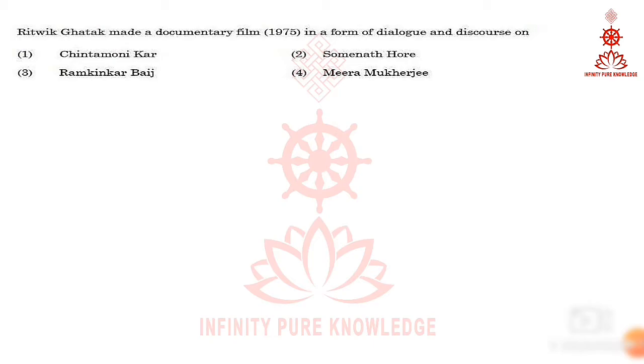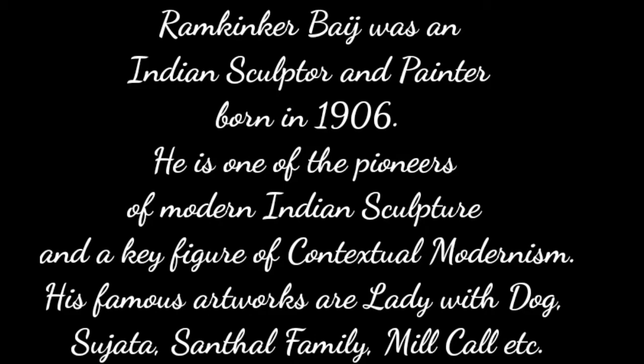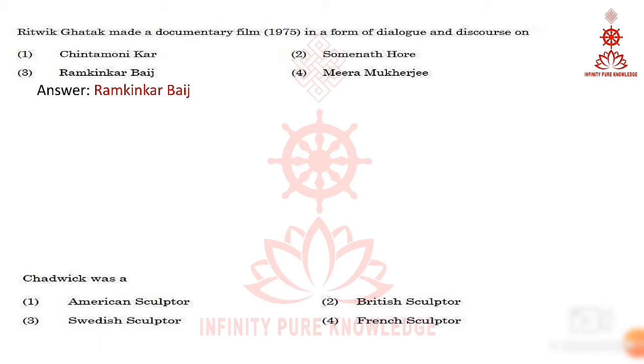Question 22: Ritwik Ghatak made a documentary film in 1975 in the form of dialogue and discourse on the artist Ramkinkar Baij. Ramkinkar Baij was an Indian sculptor and painter born in 1906. He is one of the pioneers of modern Indian sculpture and a key figure of contextual modernism. His famous artworks include Lady with Dog, Sujata, Central Family, Mill Call, and others.